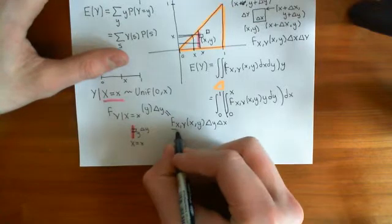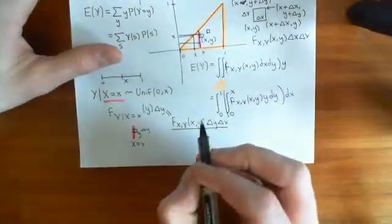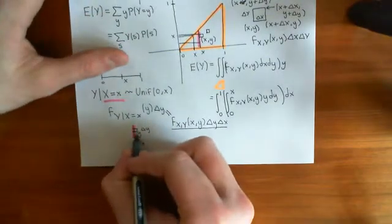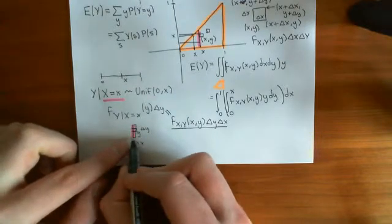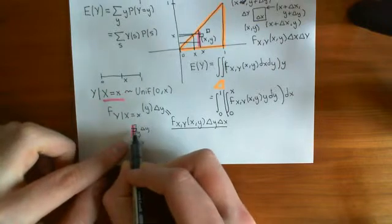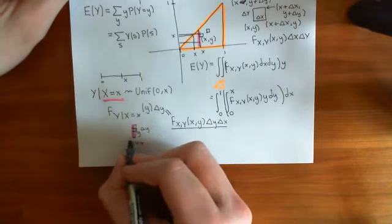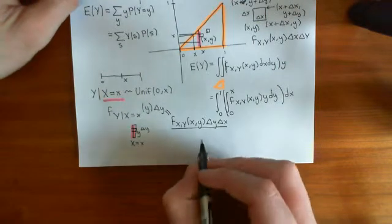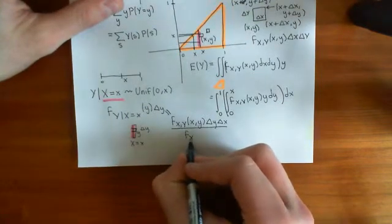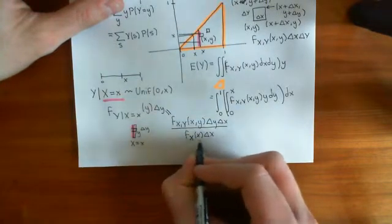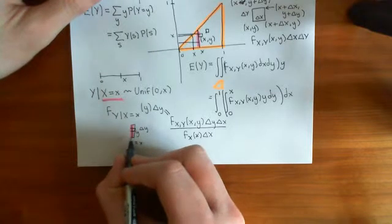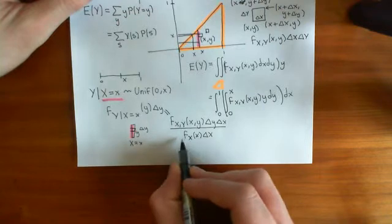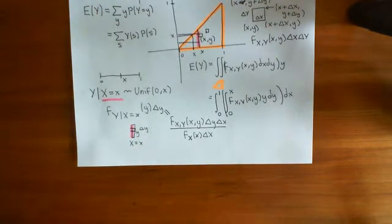Now what we need to do is divide that by the probability of being in the entire pink space. To do that, we consider making the entire pink space have the same width as that little box, because again, we can't find the probability of being on a pink line — we have to give it a width. So we give it this same width as our little box, and we divide through by the probability of that little box. That's going to be the marginal PDF of big X evaluated at little x times delta x. What we're asking is what's the probability of big X being within the interval little x to little x plus delta x — that's the marginal PDF of big X evaluated times delta x. Now we can cancel the delta y's and the delta x's.